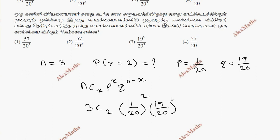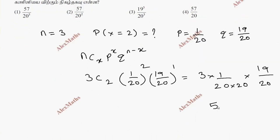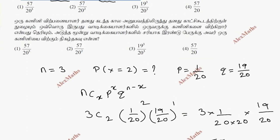That's 3C2 which is 3, times 1 by 20 times 20, times 19 by 20. This gives us 57 in the numerator and 20 cube in the denominator. So the answer is 57 by 20 cube.